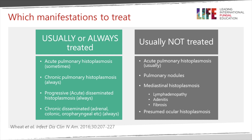The manifestations that are not usually treated include the mild forms of acute pulmonary histoplasmosis, pulmonary nodules due to histoplasmosis, mediastinal histoplasmosis including lymphadenopathy, adenitis or fibrosis, and what's called presumed ocular histoplasmosis.